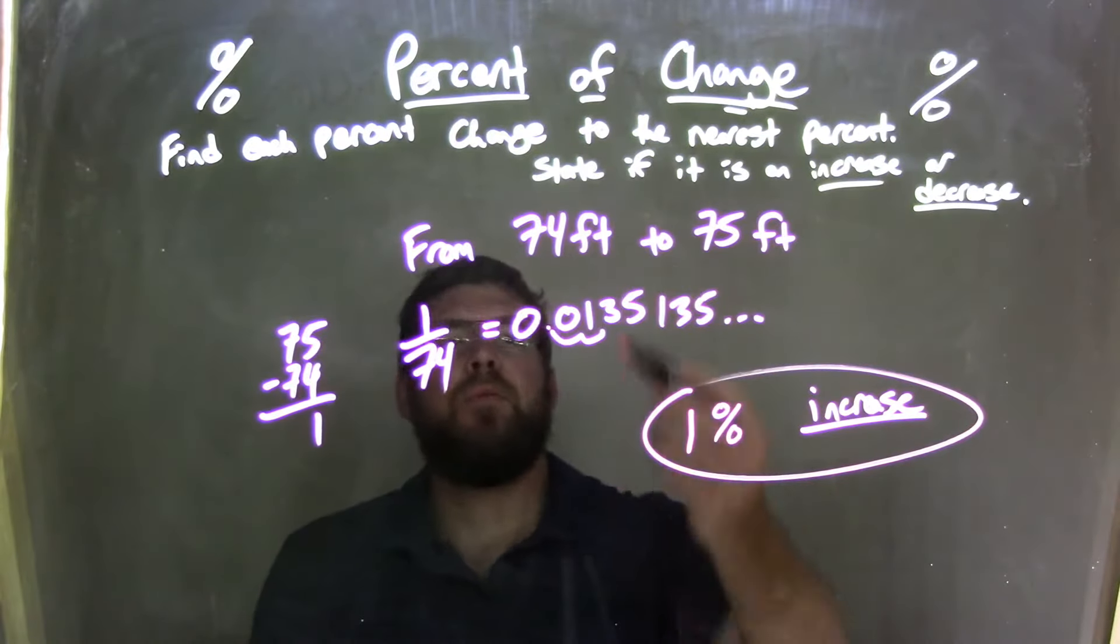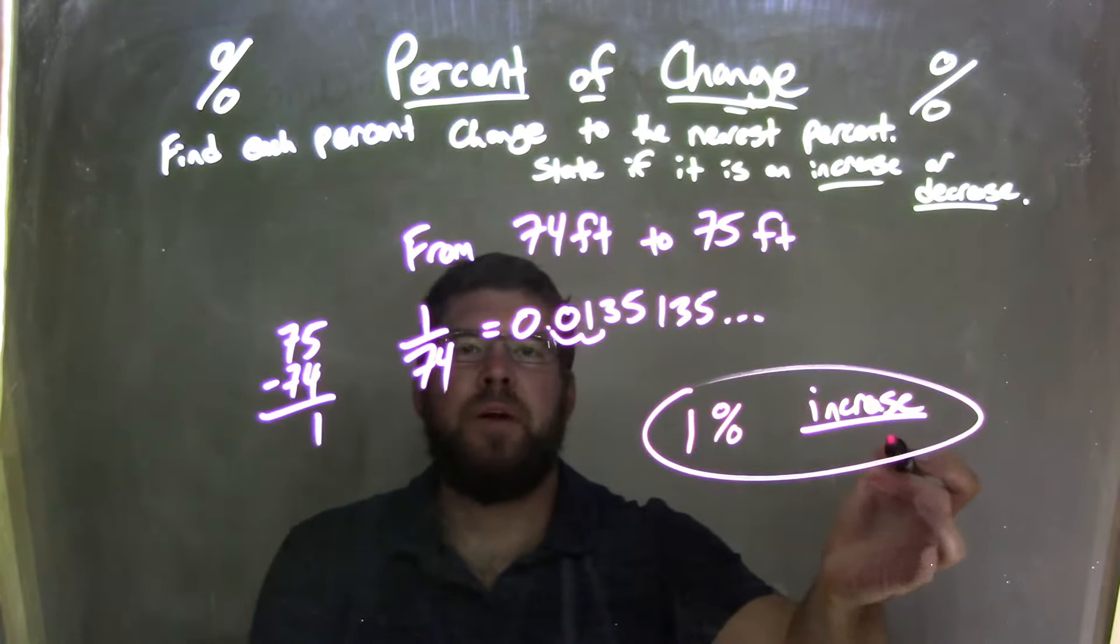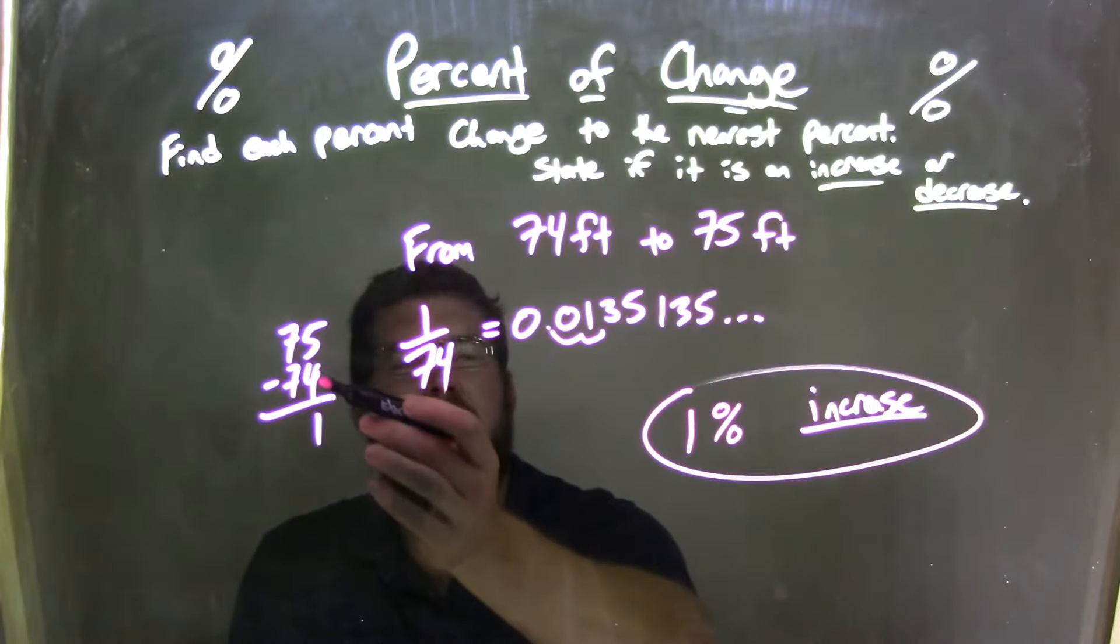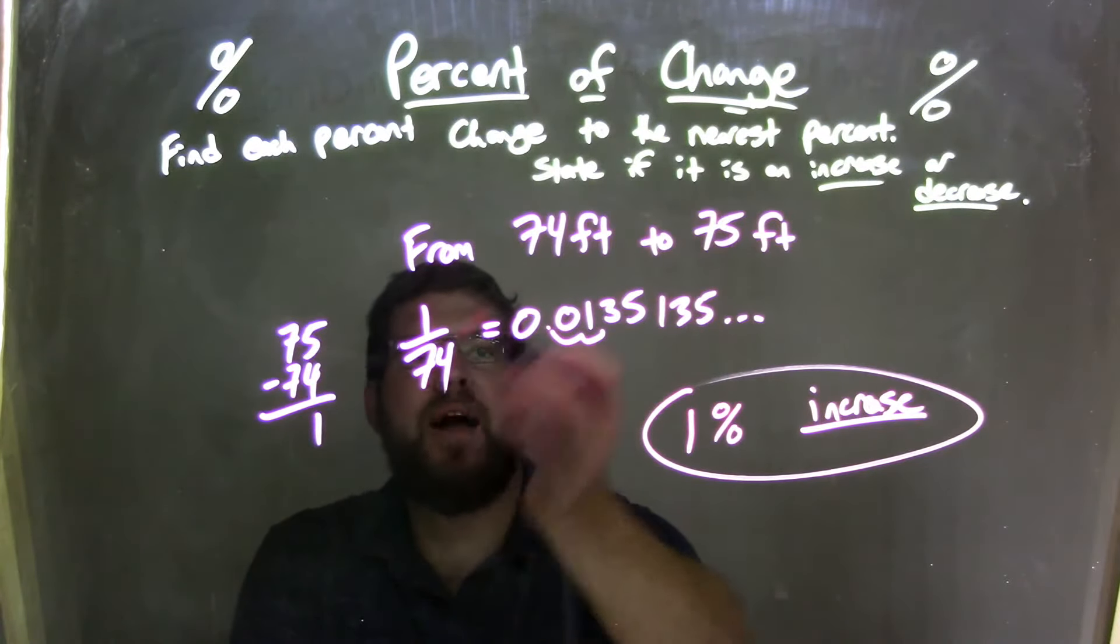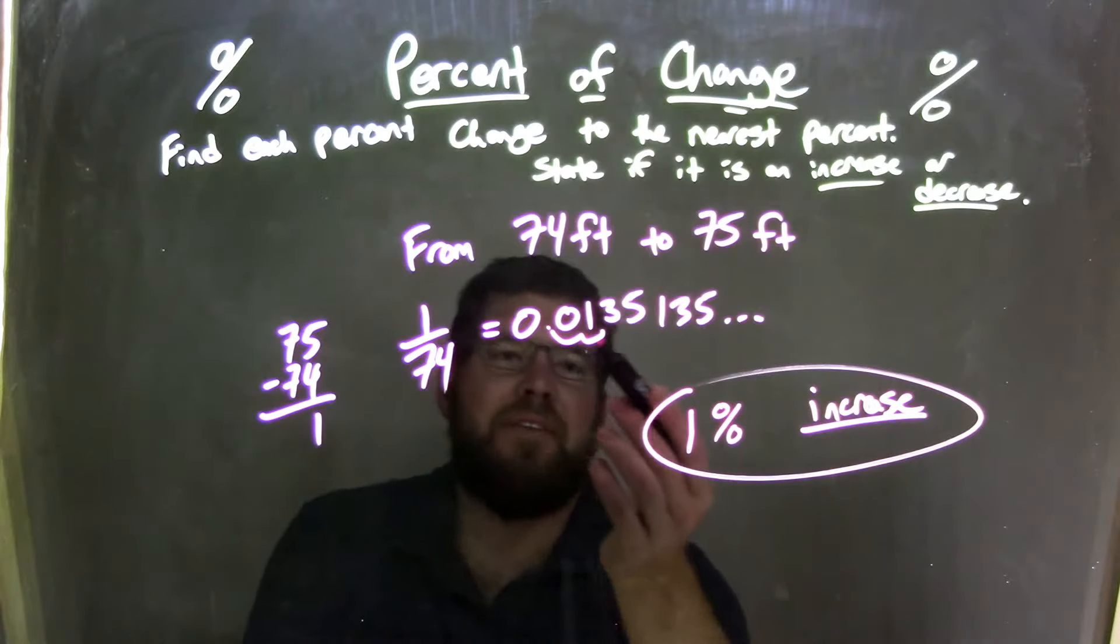So let's recap. We started from 74 to 75. We knew that was an increase that was going up. We found a difference. 75 minus 74, which is 1. We took that 1, divide it by our first number, 74, which gave us this decimal.